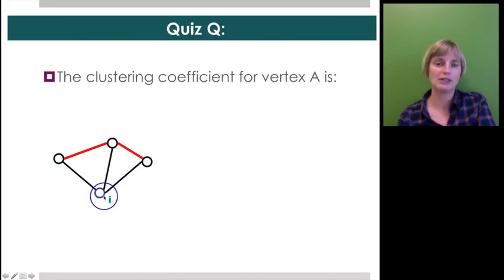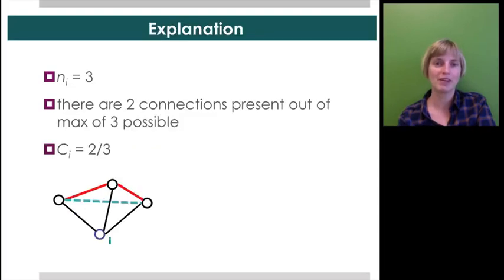So I'd like you to try this with this vertex i, who has three friends. Can you calculate the clustering coefficient? Okay, hopefully you calculated the clustering coefficient as follows. You have three neighbors, which also means three potential edges, because 3 times 2 divided by 2 is 3, and 2 of these edges are actually there, giving you a clustering coefficient of 2 thirds.